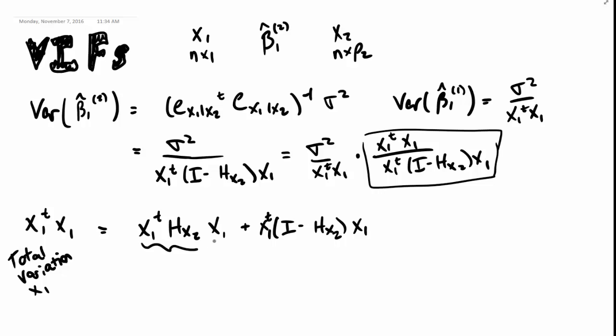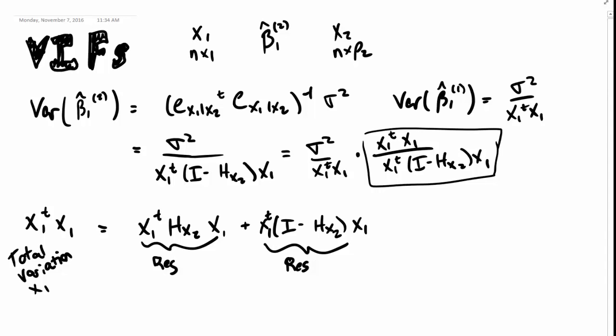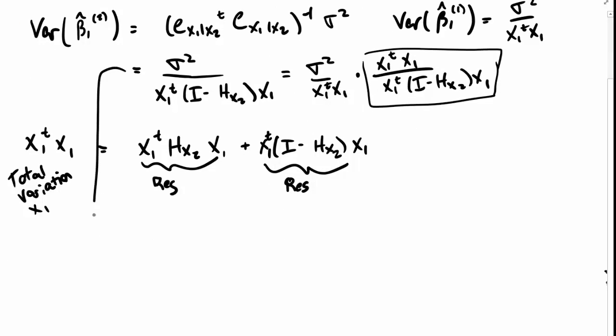So this is regression variation, SS reg, and this is residual variation, SS resid. So we can write this out as sigma squared over X1 transpose X1 times, and then recall that if we took the regression variation and divided it by the total variation, then we got the R squared. So you can do that calculation and show that this is 1 over 1 minus, let's say, R1 squared.